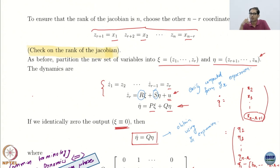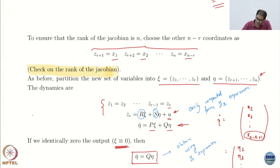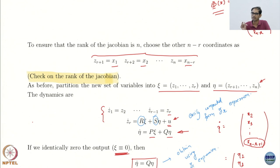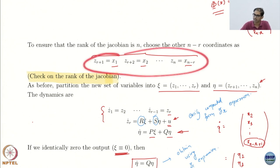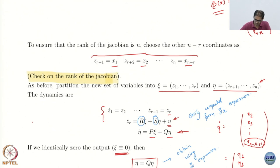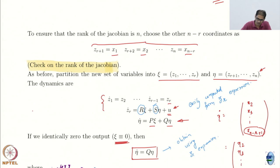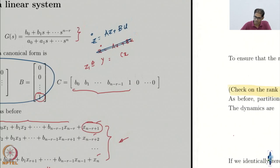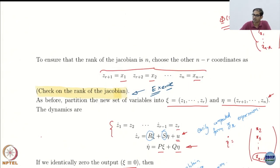How do we choose the rest of the coordinates? The way it has been done here is to take them to be the first n minus r states. I already had Z1 to Zr, so now I need n minus r more states, and I am just taking them as the first n minus r states. It turns out to work fine — you have to find the rank of the Jacobian, and you can verify it will turn out to be full rank.